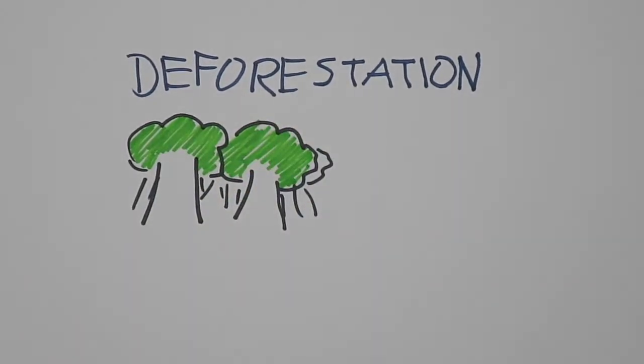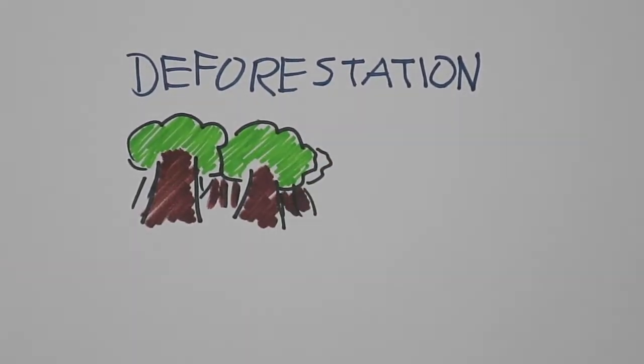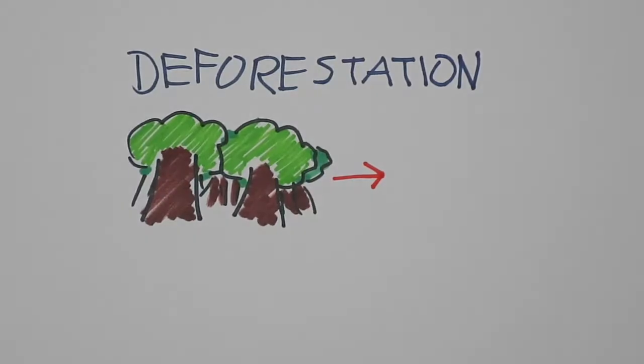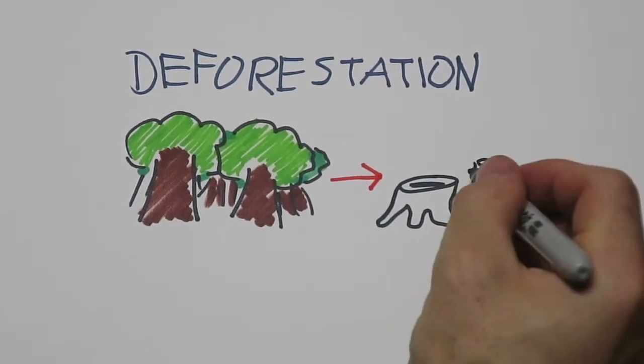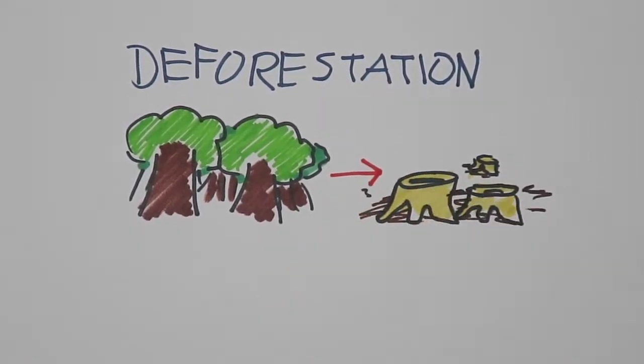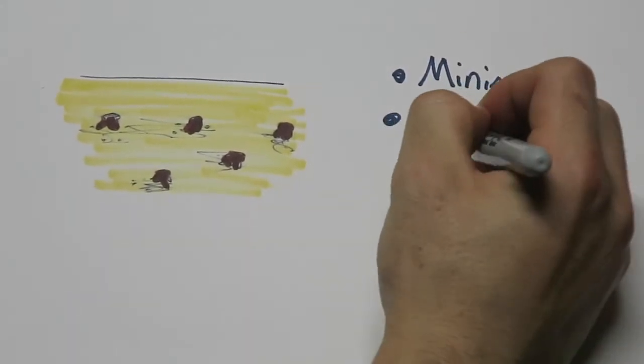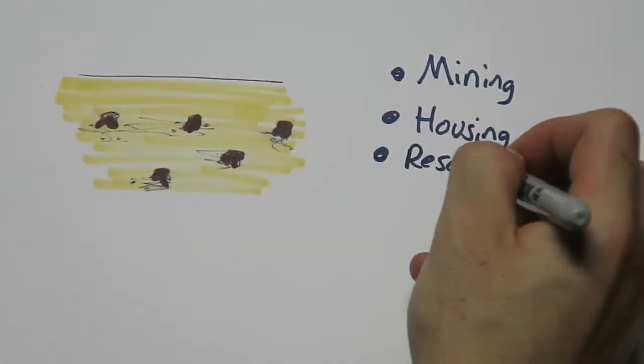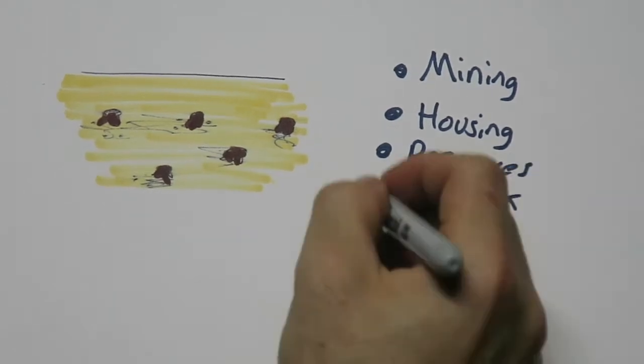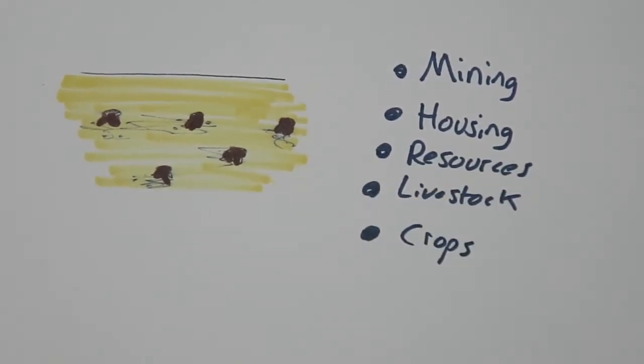Deforestation is the process of mass clearing or removal of trees in areas densely populated by trees and other plant life. While this can happen due to natural causes, it is usually the result of deliberate human activity. The main reasons for deforestation include clearing land for mining, clearing land for housing and development, farming the timber for use as a resource, and pasture for livestock and crops.